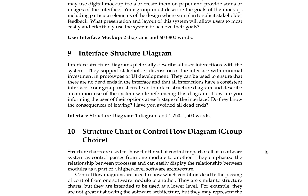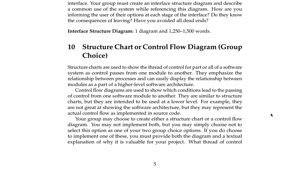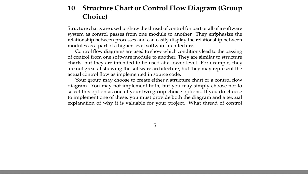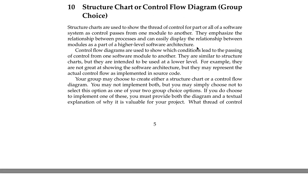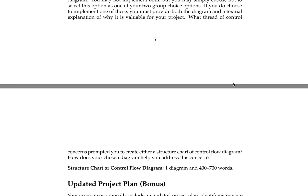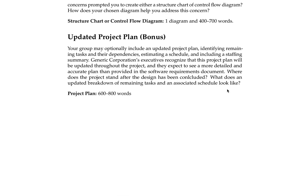The interface structure diagram is required for everyone. This involves creating an interface structure diagram to highlight the flow of the interface from one screen to the next. Then you can choose to do either a structure chart or a control flow diagram — I do not want to see both. If you choose the structure chart, it's a good complement to the coupling and cohesion section. The control flow diagram is better if you want to work through a complicated process. Finally, updating the project plan from your first deliverable earns bonus points.